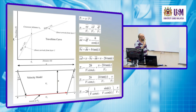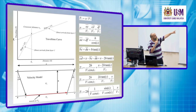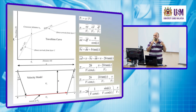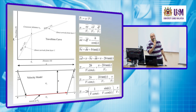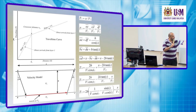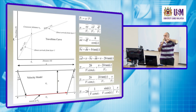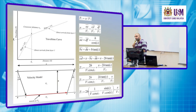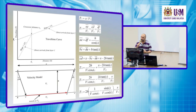Thus the total length of the ray from source to receiver equals 2H / cos(IC) plus X minus 2H · tan(IC). That is: the path from A to C and D to F is 2H / cos(IC), and the horizontal leg CD is X minus 2H · tan(IC).